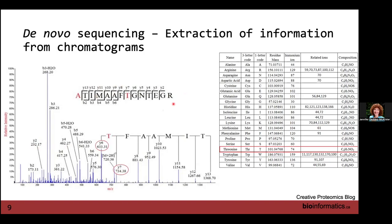To identify b and y ions, the software uses features like signal abundance relative to background, how many times an ion is detected, and instrument-level mapping. Ions detected repeatedly may be contaminants. Multiple parameters are used in combination to distinguish true b and y ions from noise.